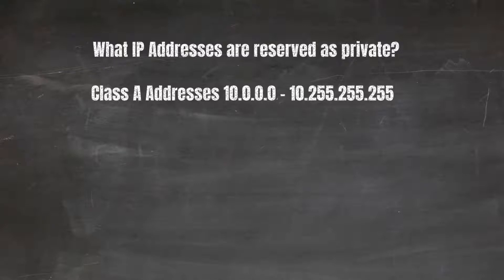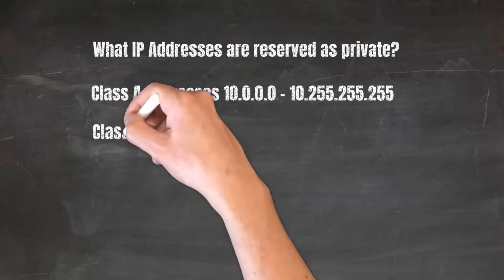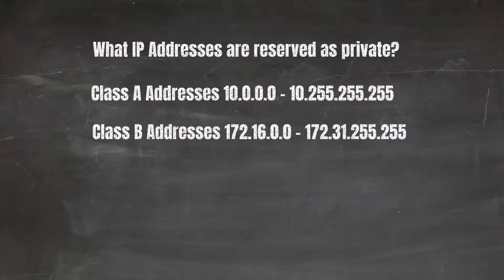A lot of times corporations use a 10.0 range for their internal network and then only use public IPs as needed by their workstations or servers. There's also a Class B range which is 172.16.0.0 to 172.31.255.255. If you see a range between 172.16 and 172.31, you know it's a private IP address range for Class B addresses.